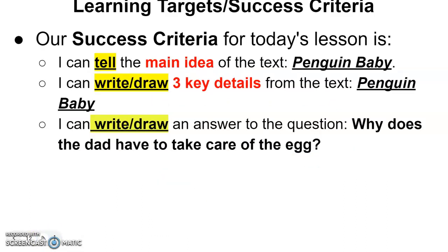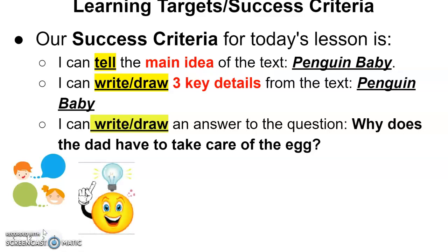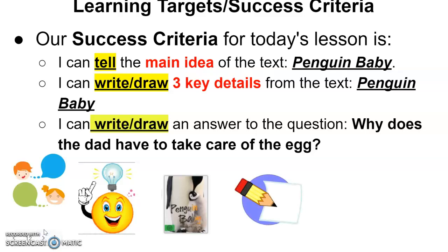Our success criteria for today's lesson is: I can tell the main idea of the text Penguin Baby; I can write and draw three key details from the text Penguin Baby; and I can write and draw an answer to the question, why does the dad have to take care of the egg? So I'm going to say in my own words what the story is mostly about, write or draw three facts from the text, and answer that question with writing and drawing.